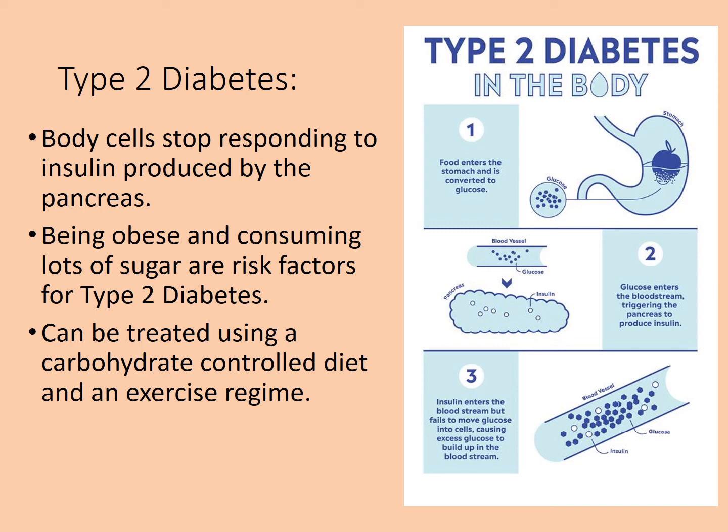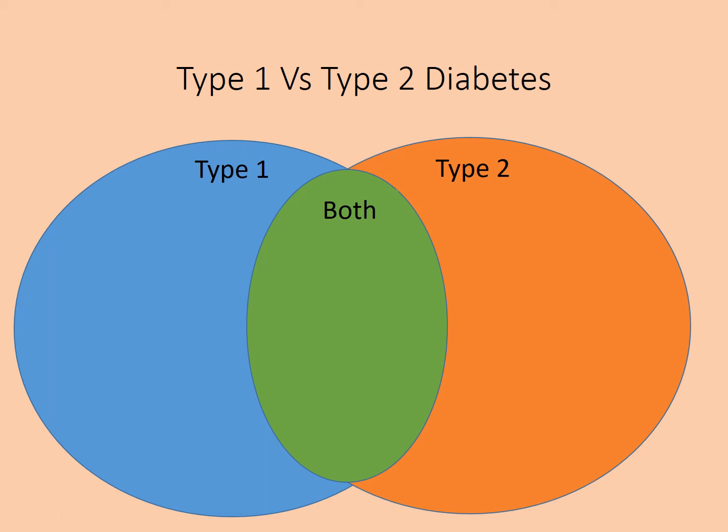Type 2 diabetes does not normally need to be controlled by injecting insulin. It can be controlled through diet — ensuring you don't eat too many sugary foods, controlling carbohydrate intake, and balancing that with exercise. For some type 2 diabetics, a very strict carbohydrate-control diet can dramatically reduce symptoms and problems associated with the condition.